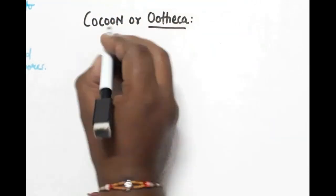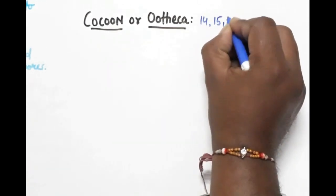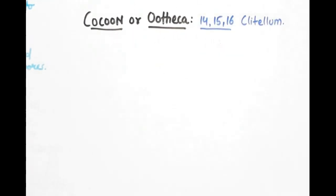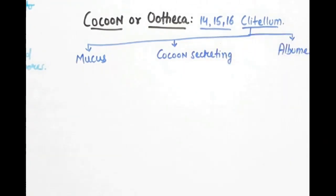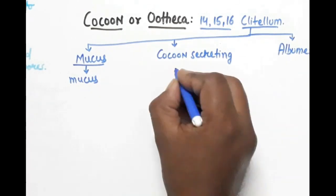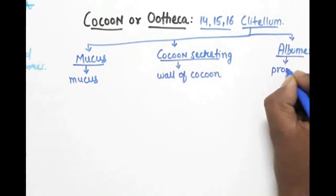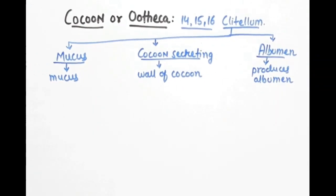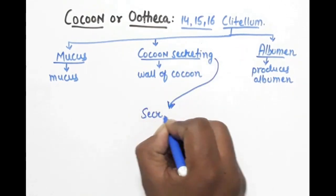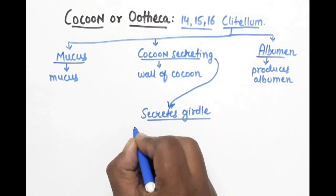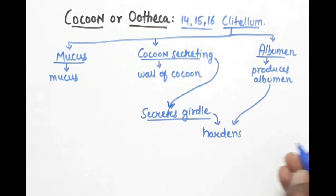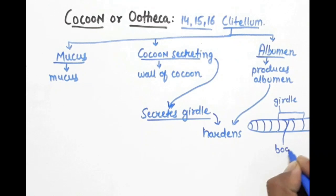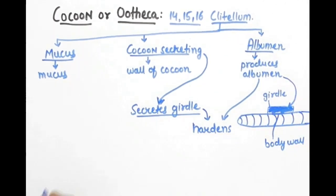Now let's talk about cocoon formation. The cocoon's name is ootheca. It develops in the clitellar region, and we know that it is in the 14, 15, and 16 segments. In the clitellar region there are three types of glands: mucous, cocoon secreting, and albumin. The mucous gland secretes mucus, the cocoon secreting gland secretes cocoon, and albumin gland produces albumin. The cocoon secreting gland secretes a structure which is called girdle. The girdle is initially slightly slimy and moist but eventually it becomes hardened. When it hardens, the albuminous gland produces albumin. If I look at the structure of the clitellar region, the clitellar region develops above the girdle and the body wall is below them, and albumin goes underneath.